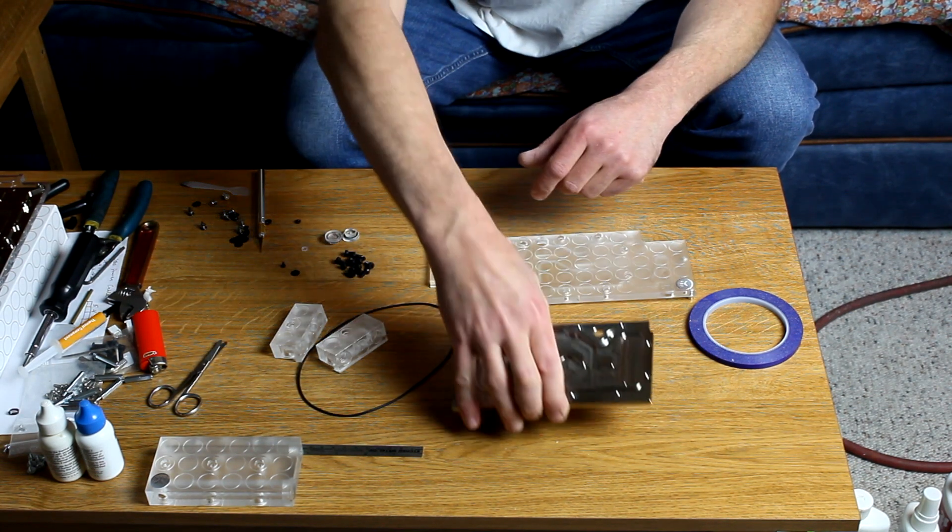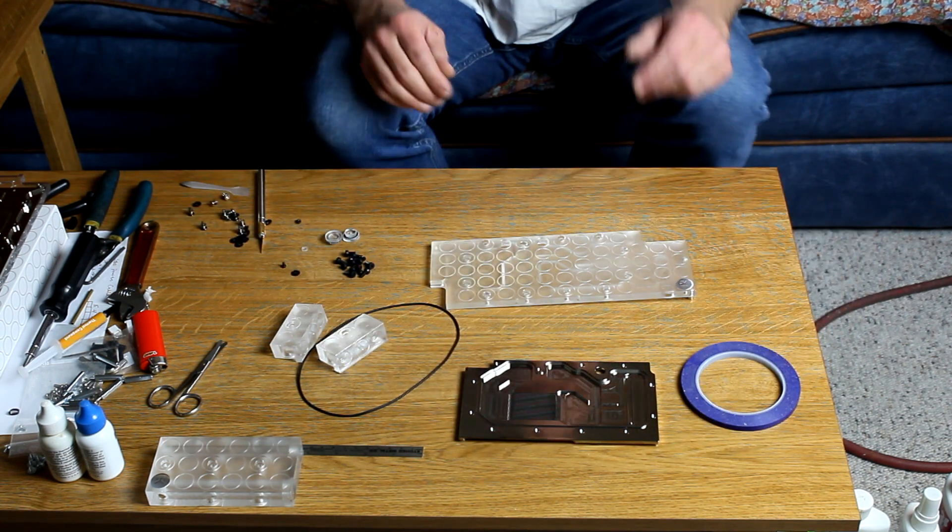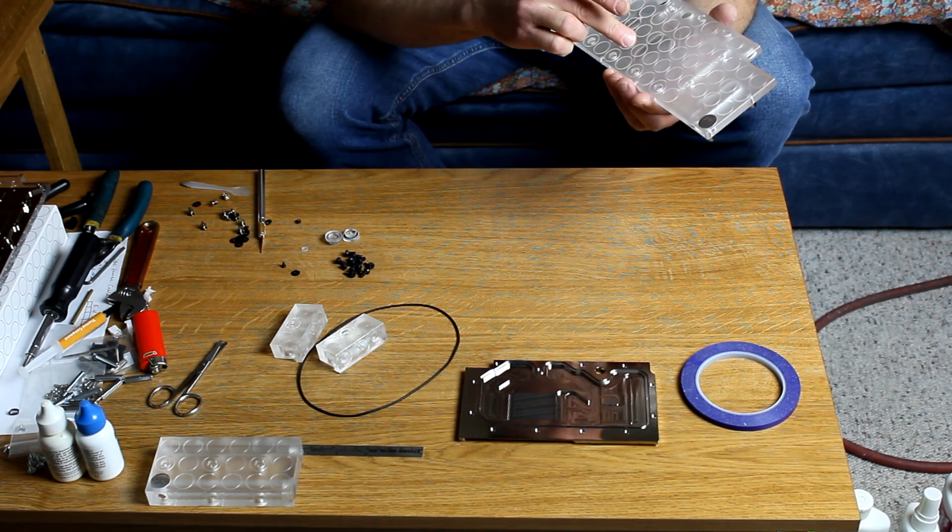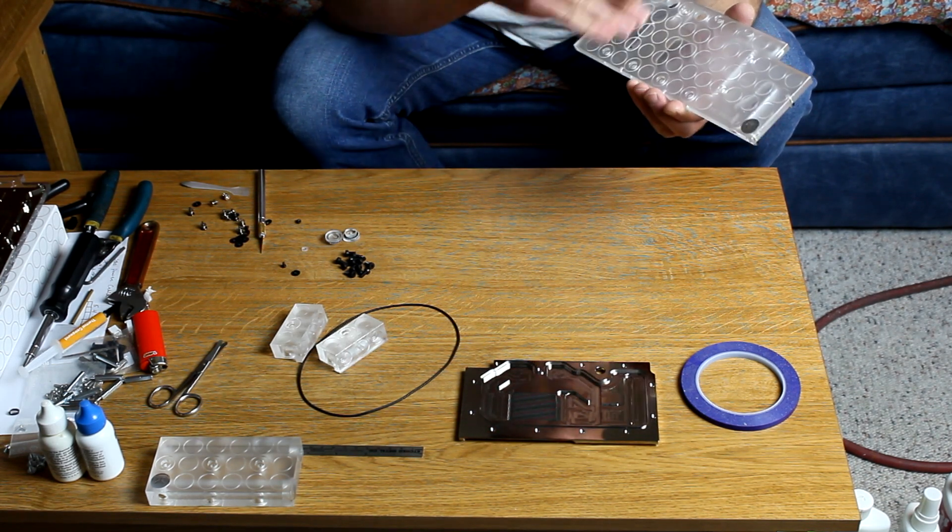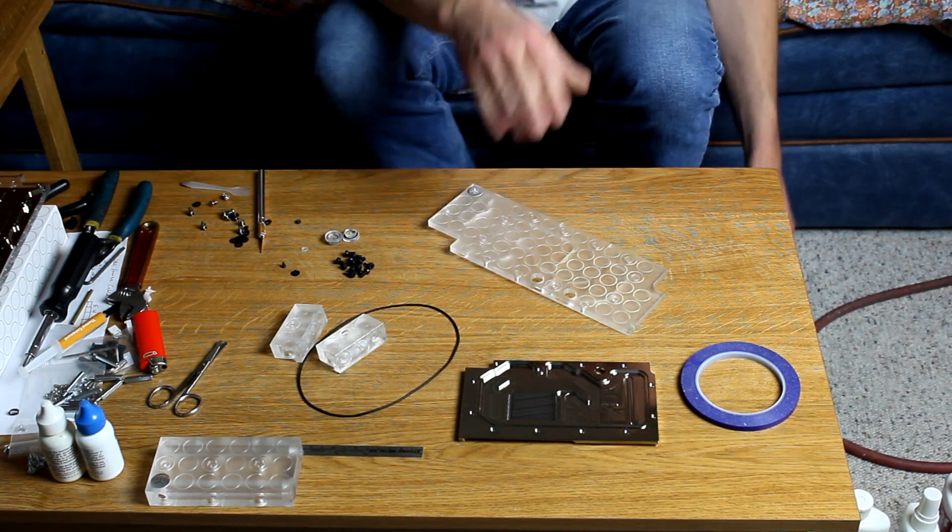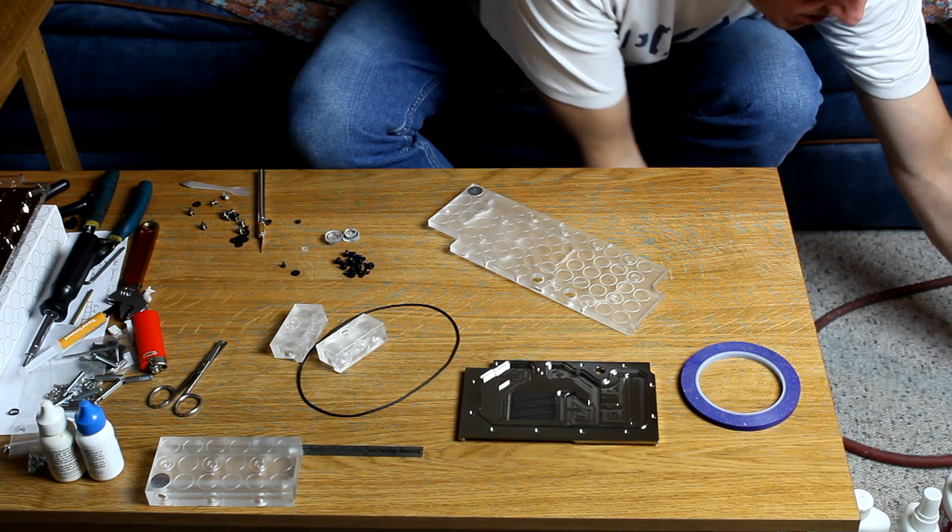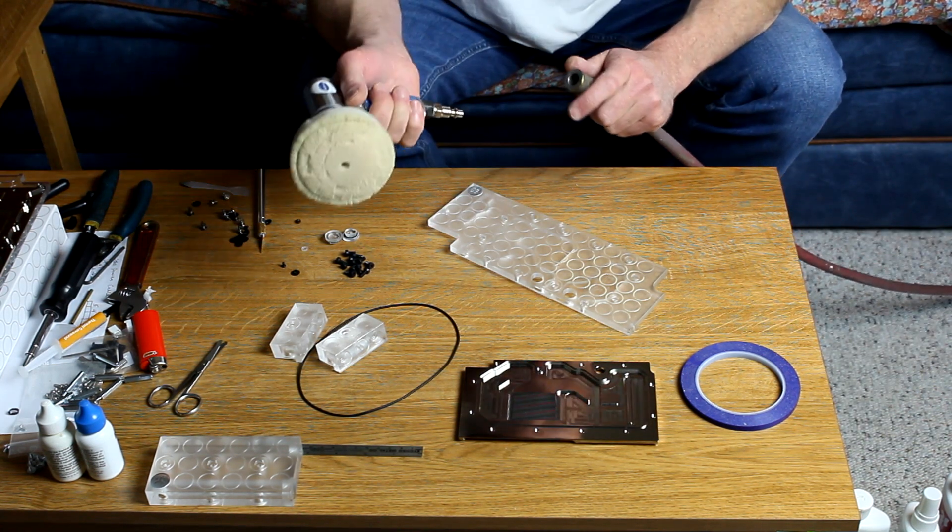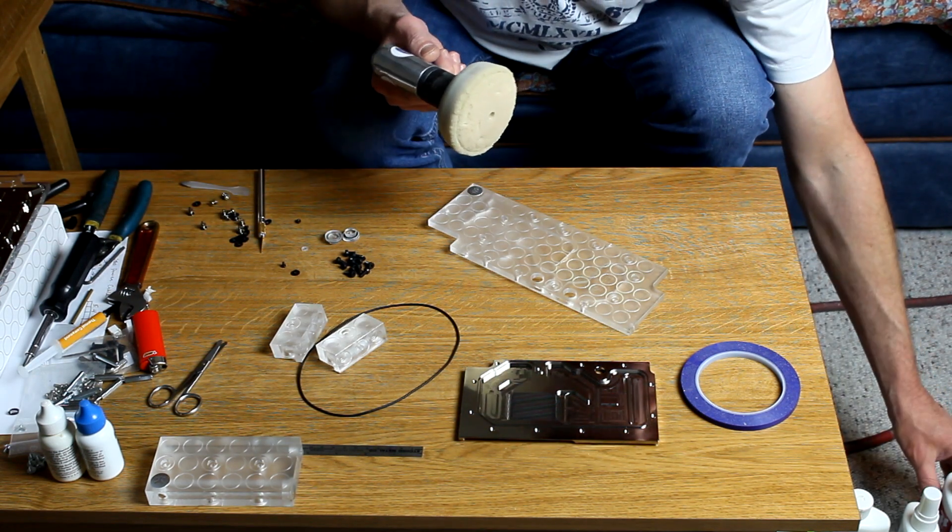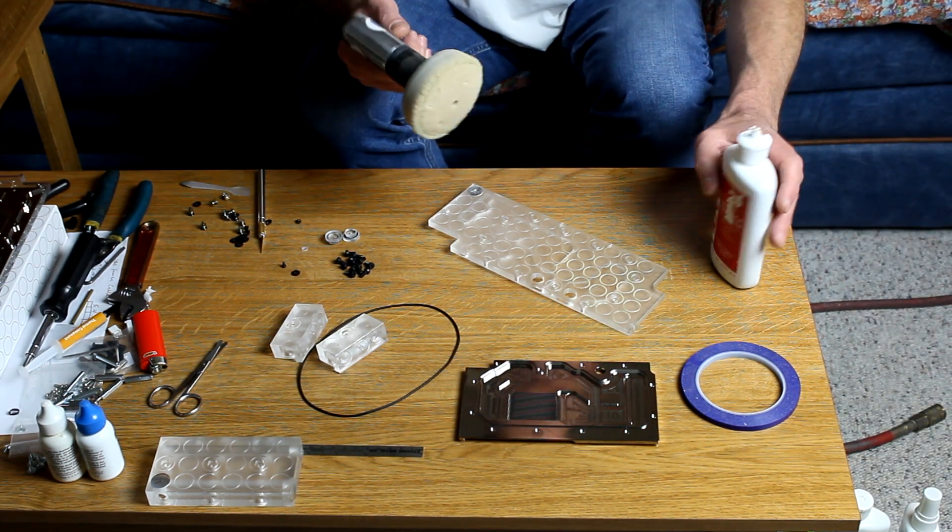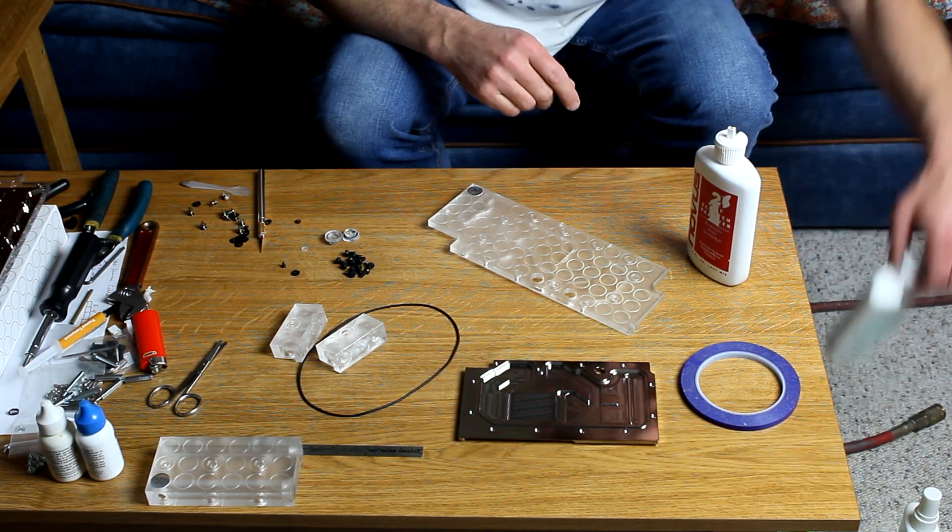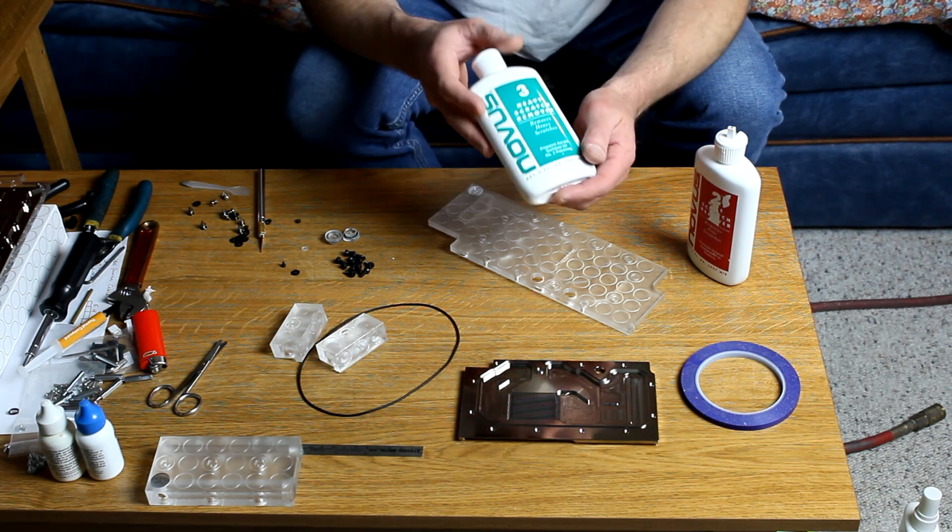Now we can talk about how you get this frosted look off. I've already started a little bit on this one. What I use is an air tool since I have access to an air compressor. I like to use Novus polishing compounds. There's a three-step process which means there's three different materials.